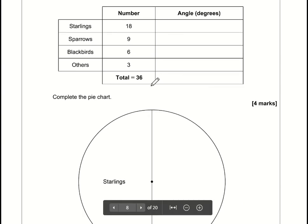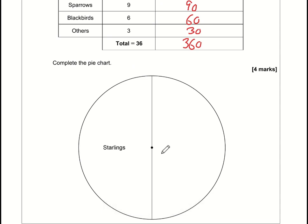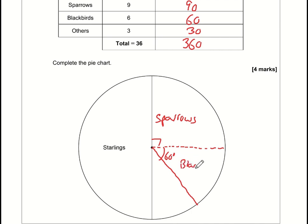Question 9: put these into a pie chart. The total is 36, and the total degrees in a circle is 360, so each bird maps as: 3→30°, 6→60°, 9→90°, 18→180°. Starlings is 180°. Draw a right angle for sparrows (90°). For blackbirds measure 60° and others 30°. Use a protractor for accuracy.